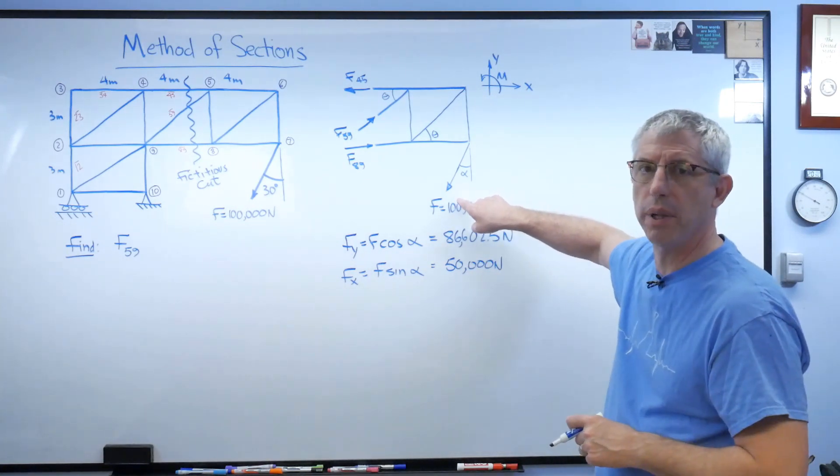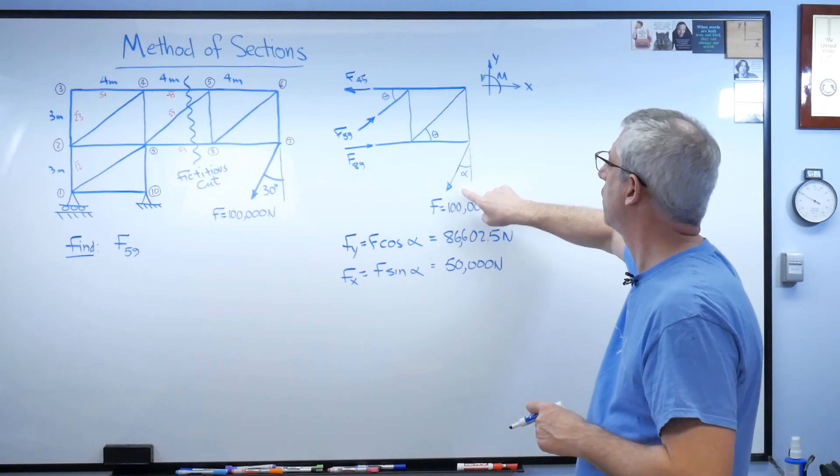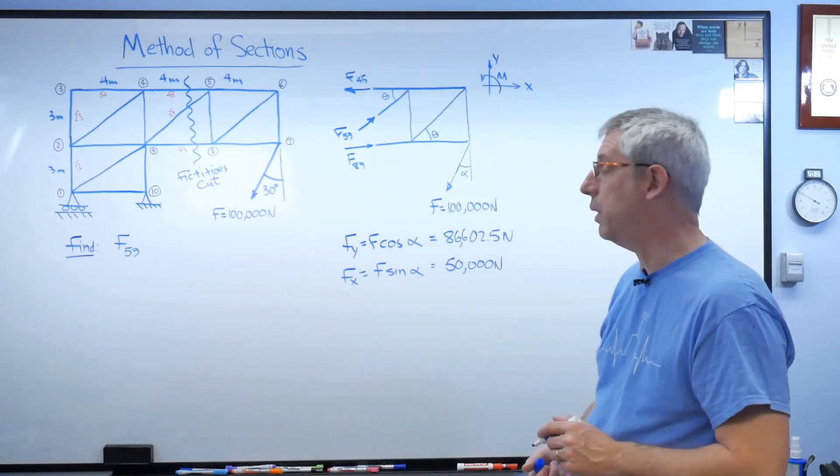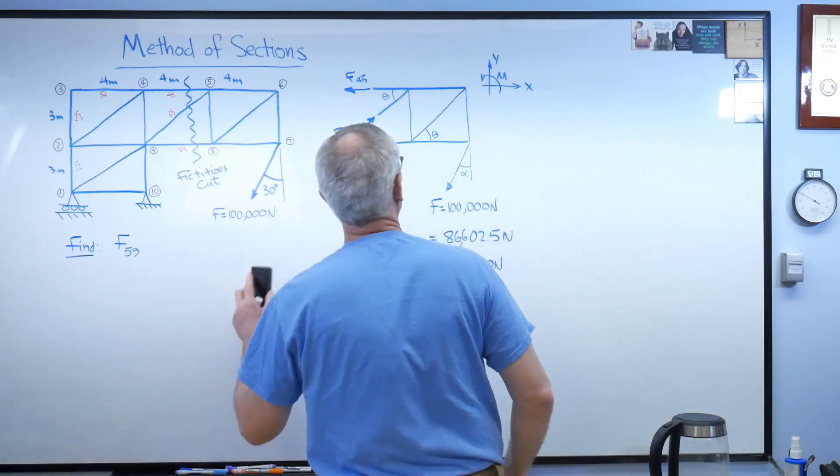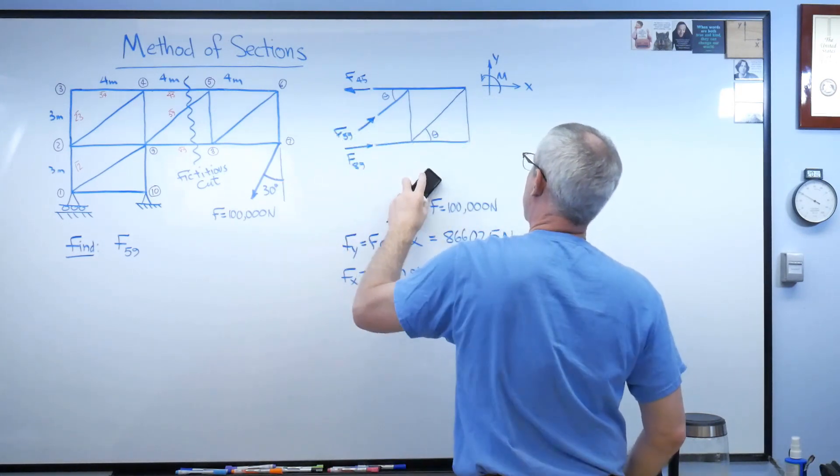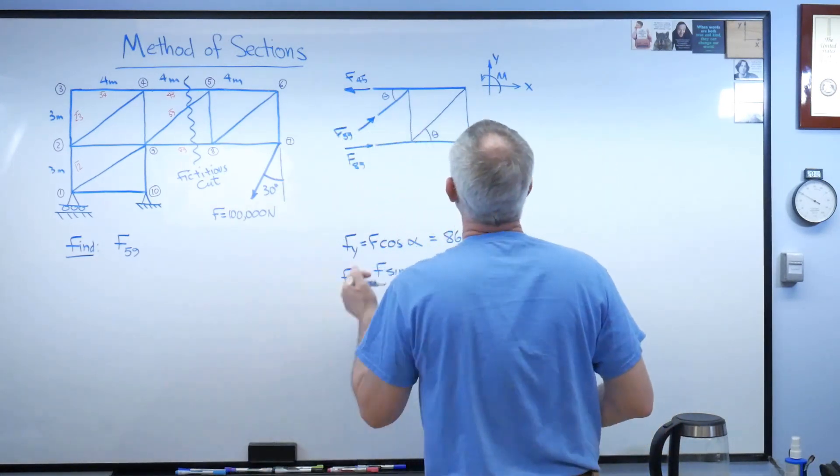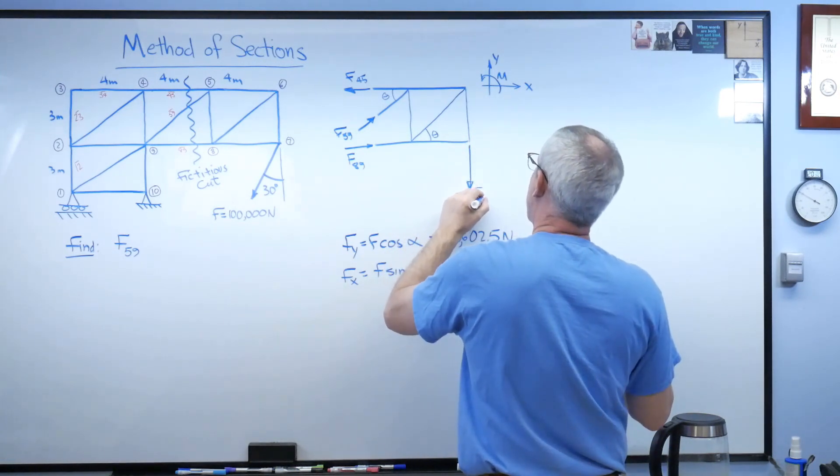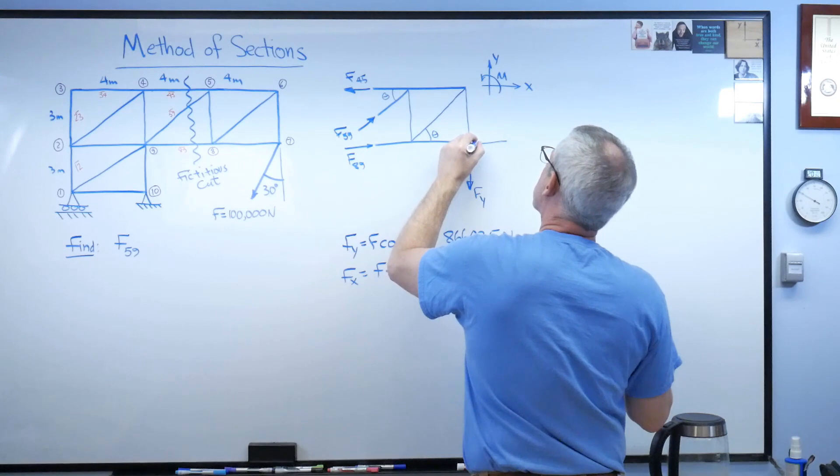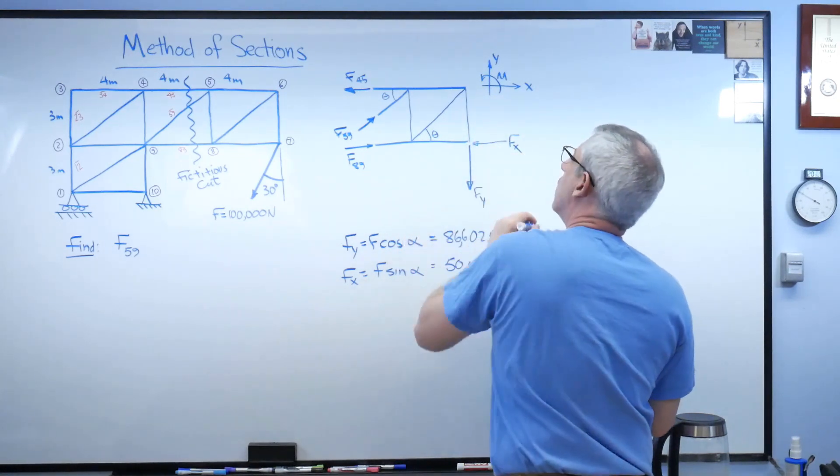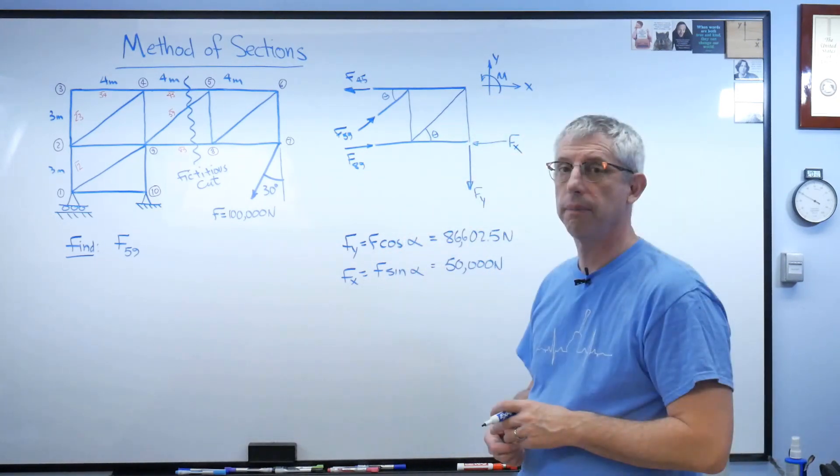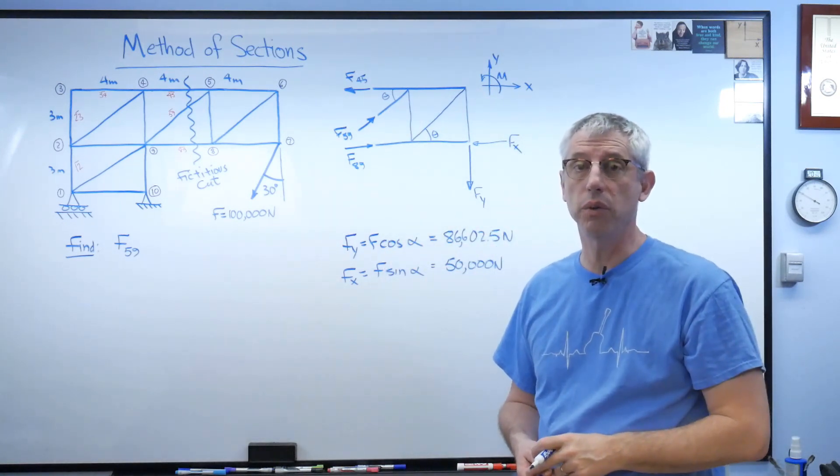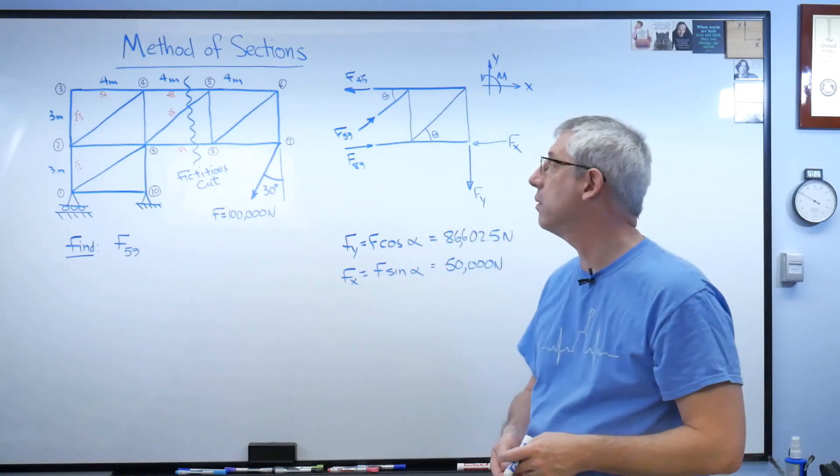And since this is a 30-degree angle, that's 86,602.5 newtons. I'm using six significant figures here, and I'll report the answer to four, just because that's what I have my students do. And this is going to be 50,000 newtons. Okay. So, there we are. We know what those are. Let's go ahead and replace those on this diagonal force on the free body diagram with the components, just to make sure we don't get confused. That's Fy, and I'll just put Fx right there.